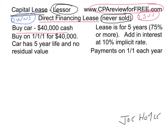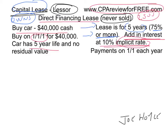In this question, the company will buy a car for $40,000 in cash on January 1, Year 1. The car has a five-year life and no residual value. They're going to lease the car for five years — since the lease is 100% of the asset's life, which is 75% or more, that makes it a capital lease. They want to make a profit, so they'll add in interest at a ten percent implicit rate. The lessor adds in interest, and that rate is called the implicit rate.